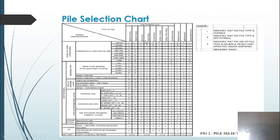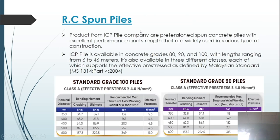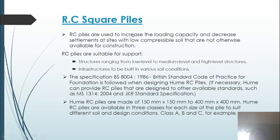This is the selection chart as you can see here. There are three types of piles that we focus on in this research. The first is RC spun pile, and we take an example from IC pile company. The second pile is RC square pile, and we take from Hume RC piles company. The RC pile is usually called for structures ranging from low-level to medium and high-level structures to be built in various soil conditions. RC square piles are used to increase loading capacity and increase the settlement at sites with low compressible soil.